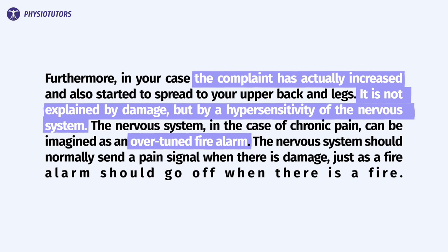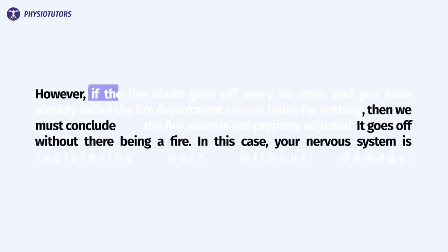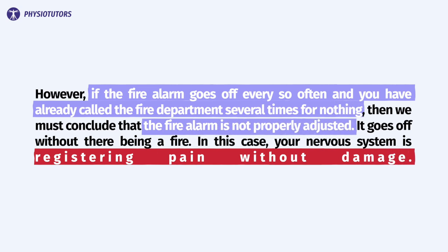It is not explained by damage but by a hypersensitivity of the nervous system. The nervous system, in the case of chronic pain, can be imagined as an overtuned fire alarm. The nervous system should normally send a pain signal when there is damage, just as a fire alarm should go off when there is a fire. However, if the fire alarm goes off every so often and you have already had to call the fire department several times for nothing, then we must conclude that the fire alarm is not properly adjusted — it goes off without there being a fire. In this case, your nervous system is registering pain without damage.